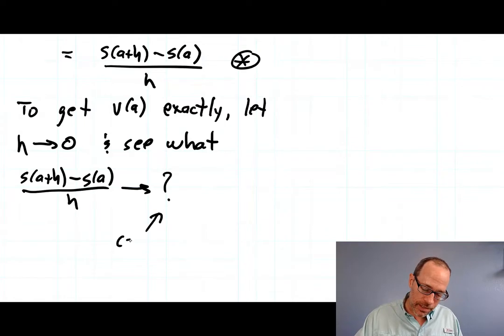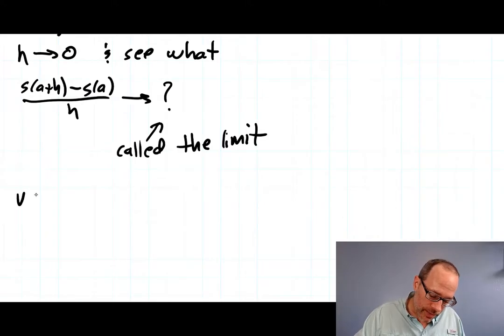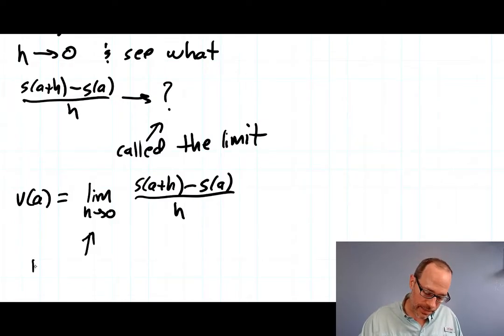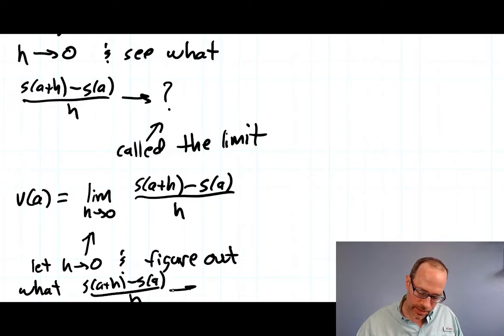So whatever this is approaching is called the limit. We'll give a slightly better definition later on, but right now it's just this process. You let h go to zero and see what s of a plus h minus s of a all over h is getting closer to. And whatever it's getting closer to, that's called the limit. And so as a result we get this as our idea. To calculate the instantaneous velocity, take the limit as h goes to zero of s of a plus h minus s of a all over h. And again what this limit means is you let h go to zero and figure out what s of a plus h minus s of a all over h is converging to. And when you figure that out, that's the limit and your answer.